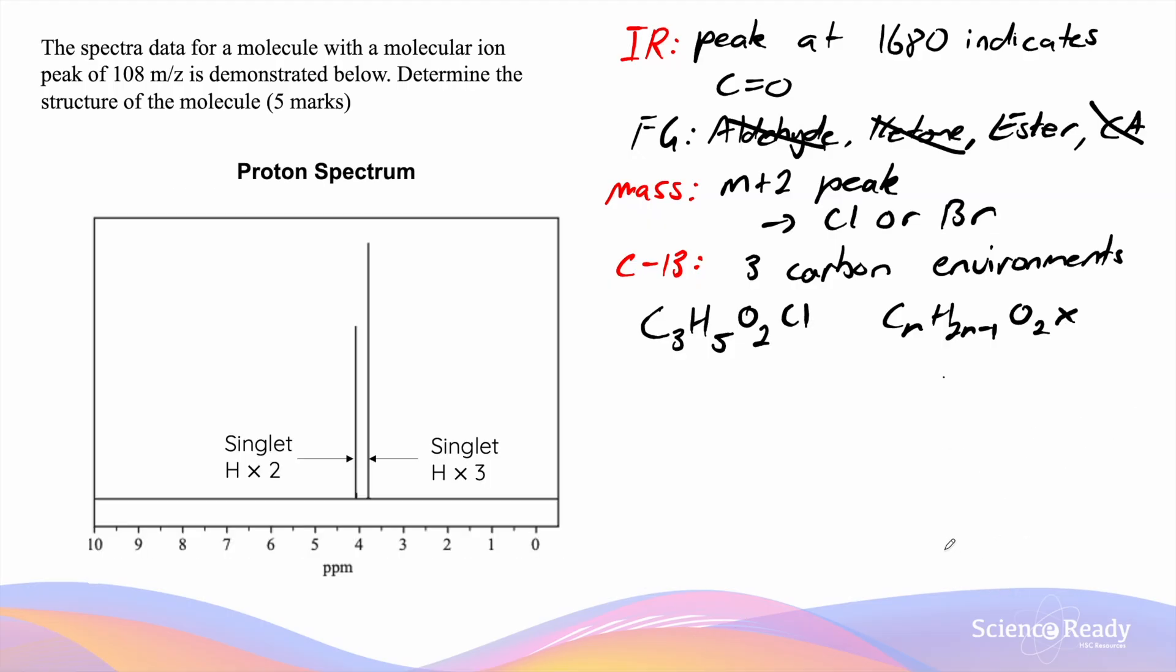Next we'll look at the proton NMR. The proton NMR indicates that there is a singlet with an integration of 2 and a singlet with an integration of 3. Integration means the area underneath the curve indicates to us the number of hydrogens that there are.